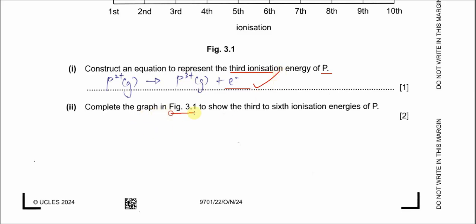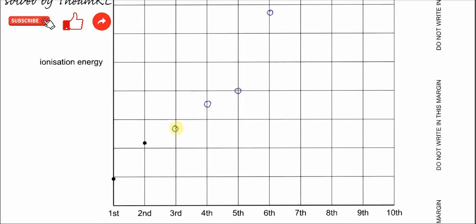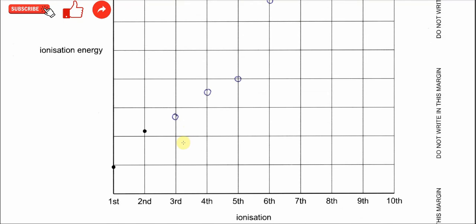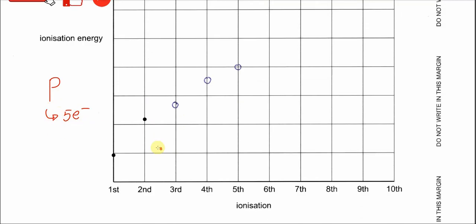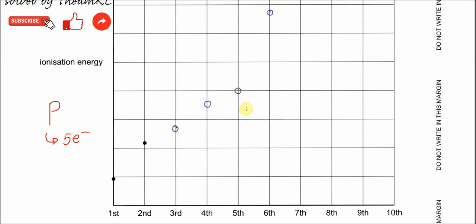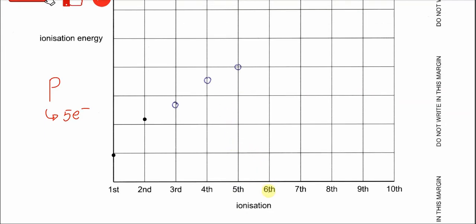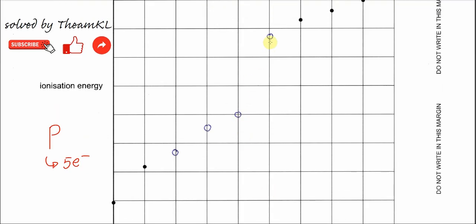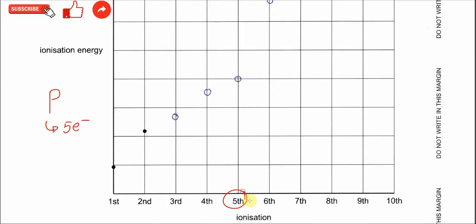Complete the graph in figure 3.1 to show the third to sixth ionization energies of phosphorus. Since phosphorus is group 15 with five valence electrons, the first five ionization energies must steadily increase with no big jump. After the second, put a slightly higher IE3, slightly higher IE4, slightly higher IE5. Between the fifth and sixth IE, there must be a big jump, because the sixth electron comes from the inner shell, closer to the nucleus, requiring much more energy — much higher than the fifth IE, closer to the seventh.